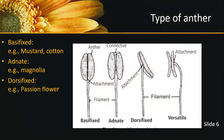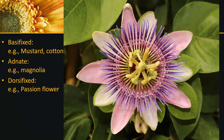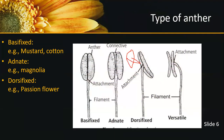The next type of anther attachment is dorsifixed, where the filament is attached to the dorsal side of the anther. The last type is versatile anther. Anemophilous flowers — flowers pollinated by wind — are called anemophilous, and they typically have versatile anthers.